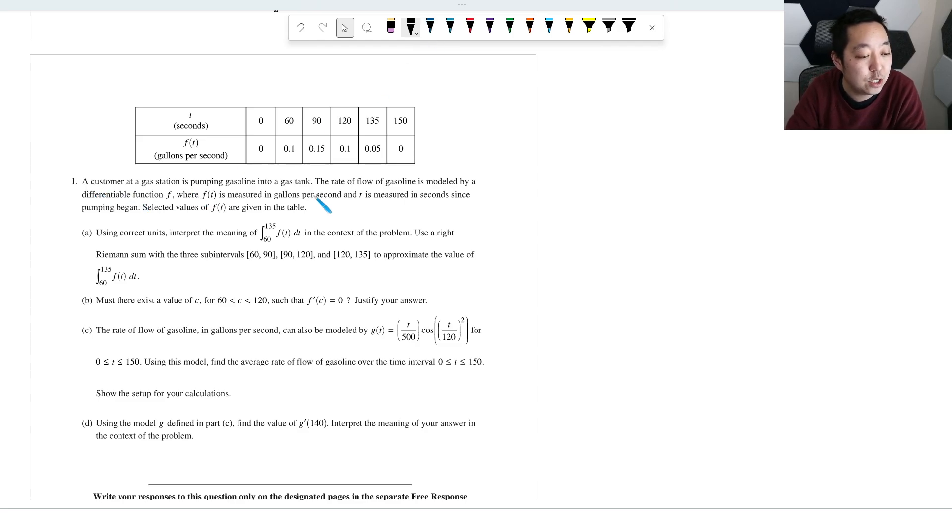So we have a customer at a gas station pumping gasoline into a tank. The rate of flow of gasoline is modeled by this function here. Using correct units, explain the meaning of this in the context of the problem. So if I integrate the rate, the rate of flow of things coming in, the integral of that rate is the amount of change.